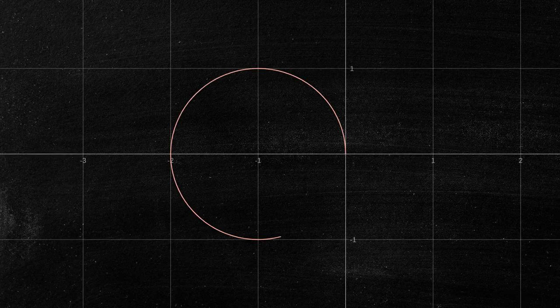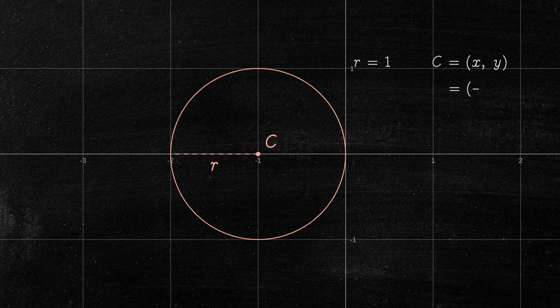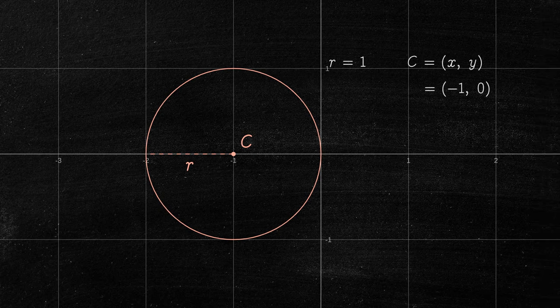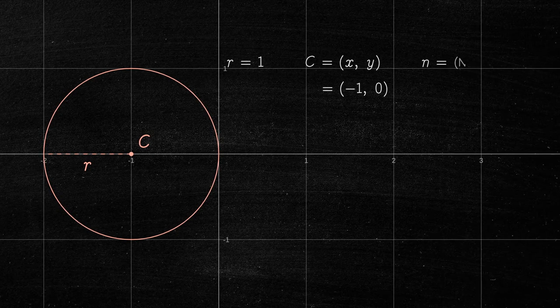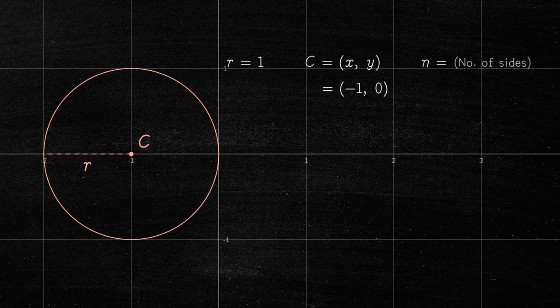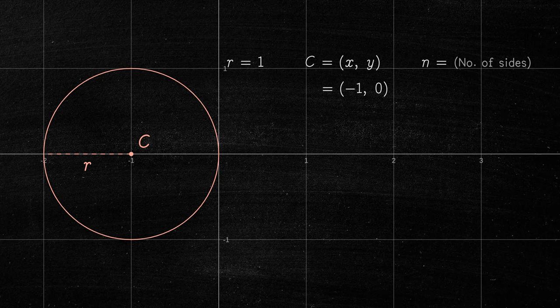Suppose we have a circle of radius R centered at point C. Now imagine we want to be able to draw any regular polygon with n sides inscribed in the circle. We can compute the coordinates of any vertex of said polygon using the following function.